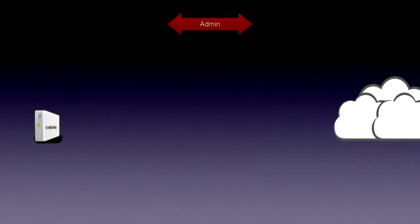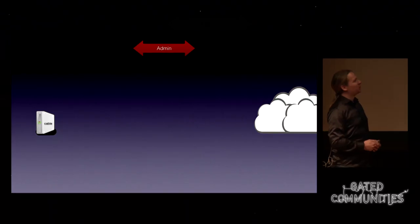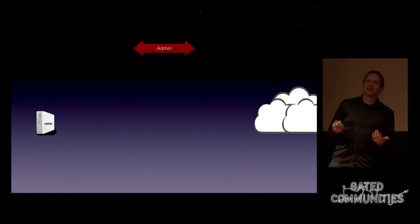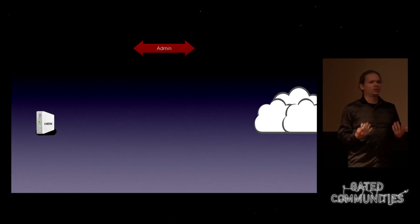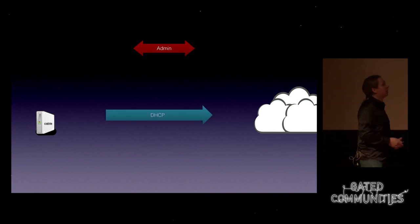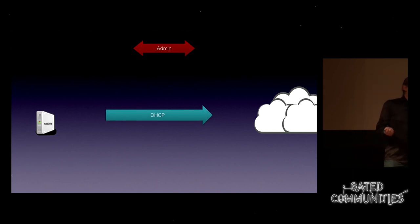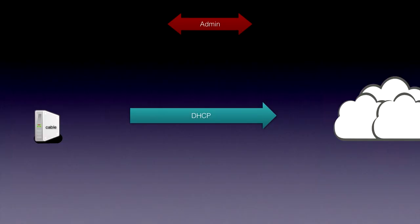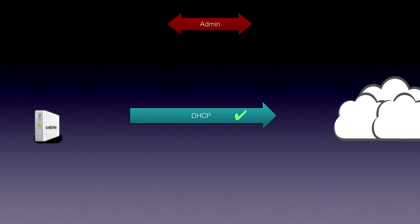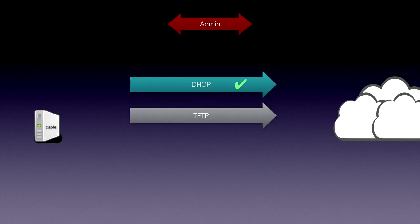Let's start with the admin line — that sounds the most interesting. What does the admin line do? In the DOCSIS network, the modem is just a normal client, like in your ethernet network. The first thing it does when it gets online is a DHCP request — it gets an IP address and all the information it needs. Similar to PXE booting, it also gets a file to download using TFTP — just like with PXE — but in this case it's a configuration file.